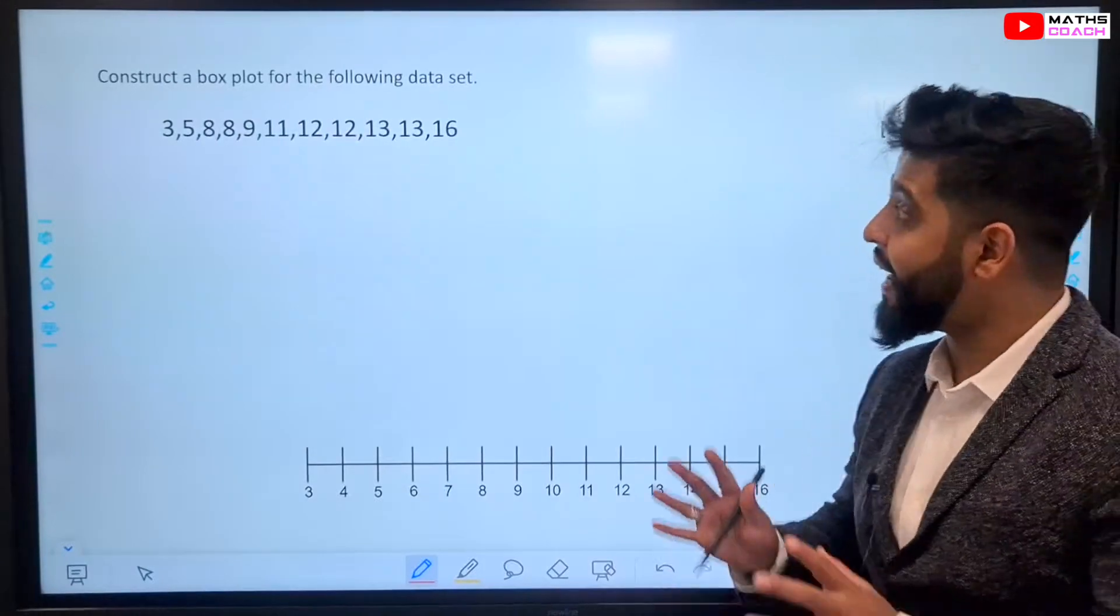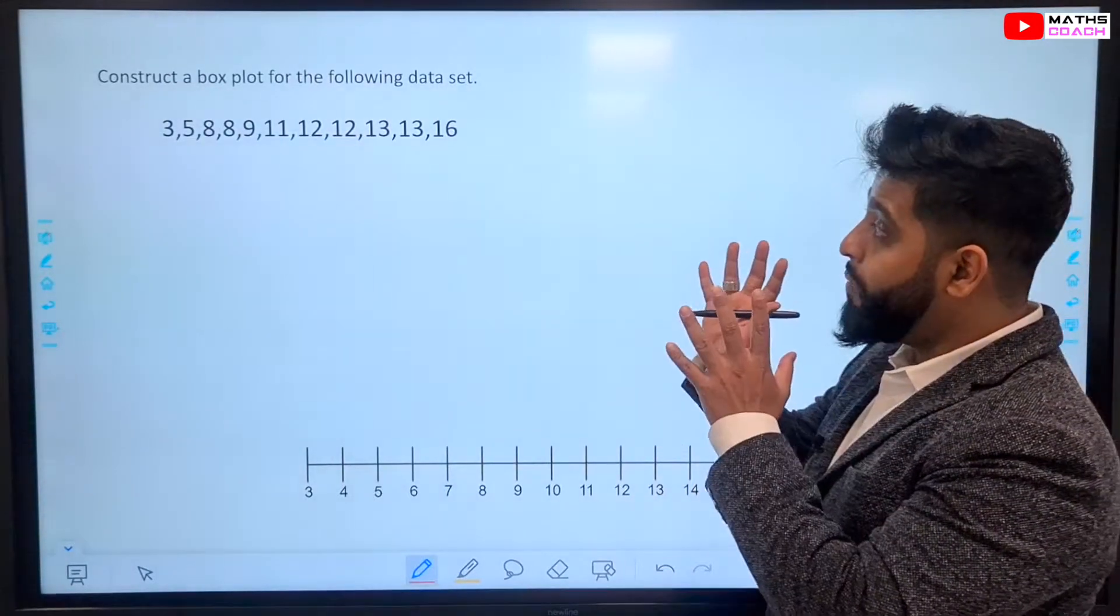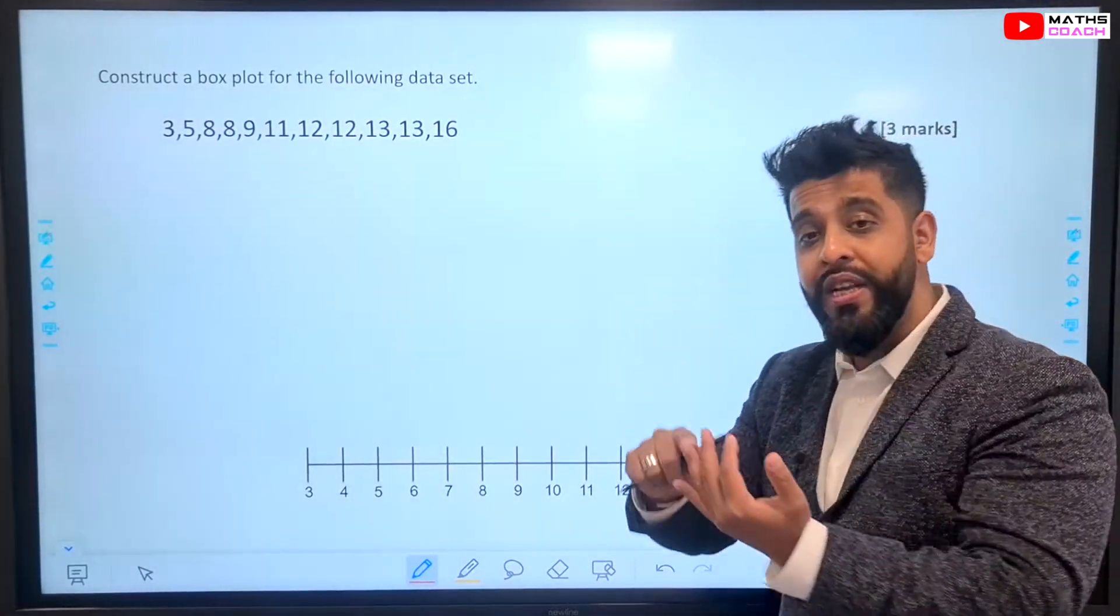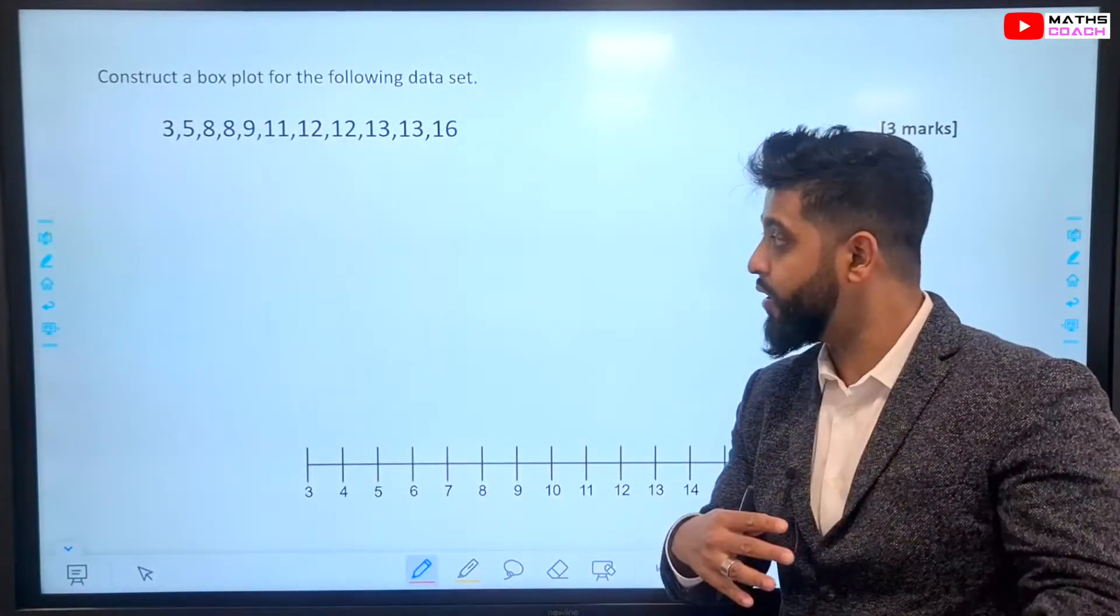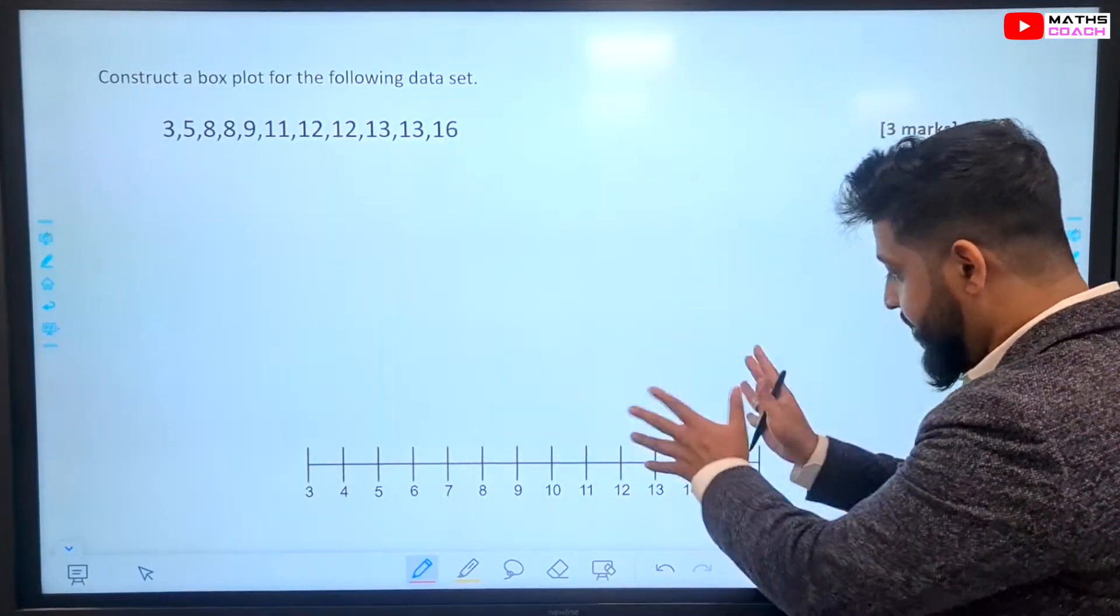Now, we are going to construct our own box plots from raw data. So, we need to calculate our median, our lowest value, our interquartile range, our upper quartile and lower quartile, everything. And then, we plot it.